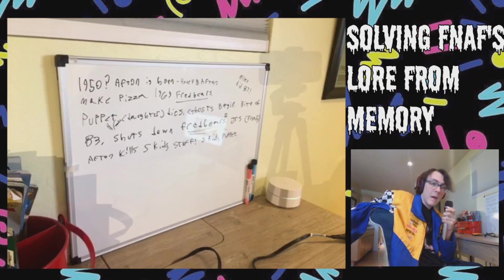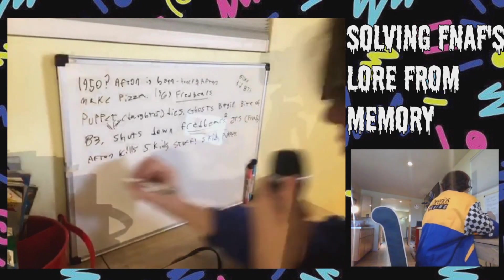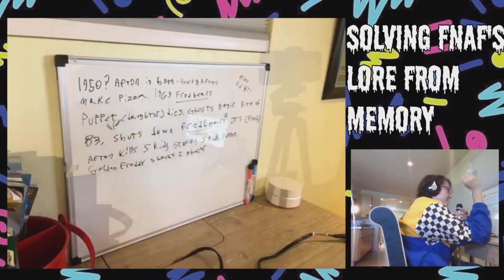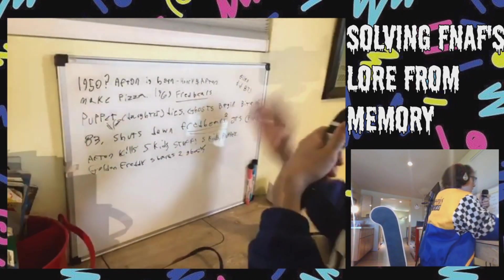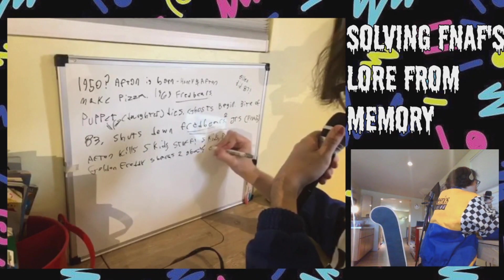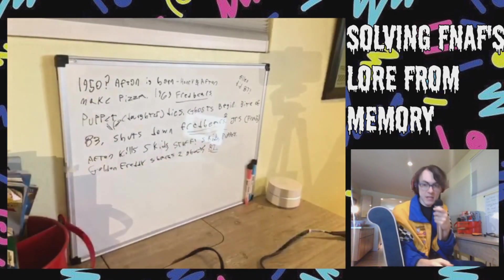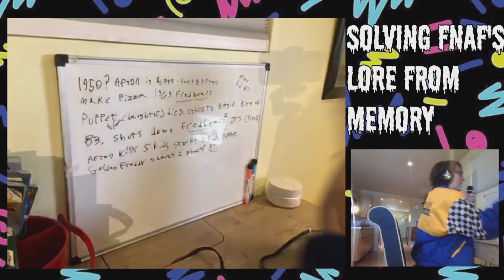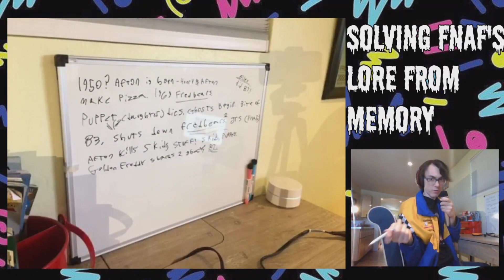Five kids, the puppet. But then also Golden Freddy shares two ghosts. Or Fred Bear. This is so, I'm so bad. And then the bite of 87 happens. Let's just put 87 here. So a bite of 87 happens, and that is what does it in. I think the whole thing is that the party at the end of FNAF 2 is where the bite of 87 happens. And as we've already established, Ellen did the bite of 87. So that's solved. We solved that one. Case closed.